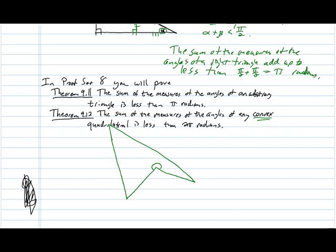You're going to draw a line between two non-adjacent vertices of the quadrilateral, and you need to know that that line stays inside of the quadrilateral, and that's what convex gives you.